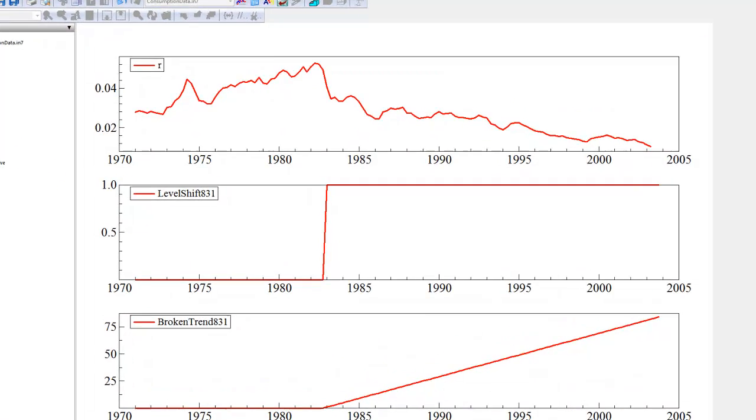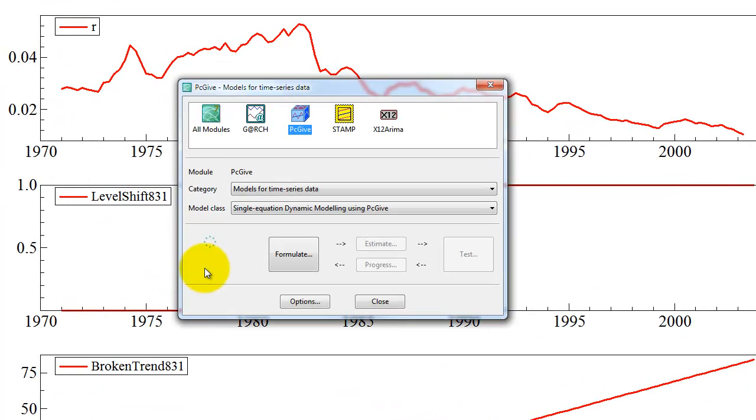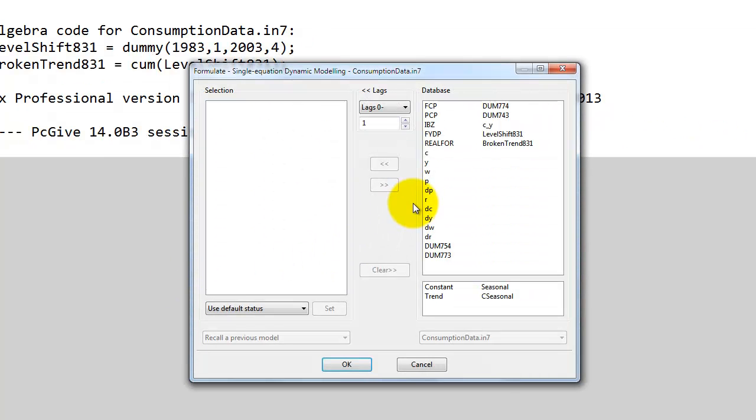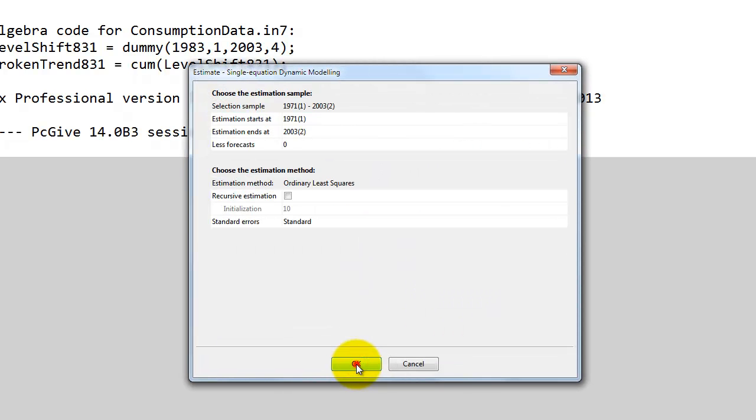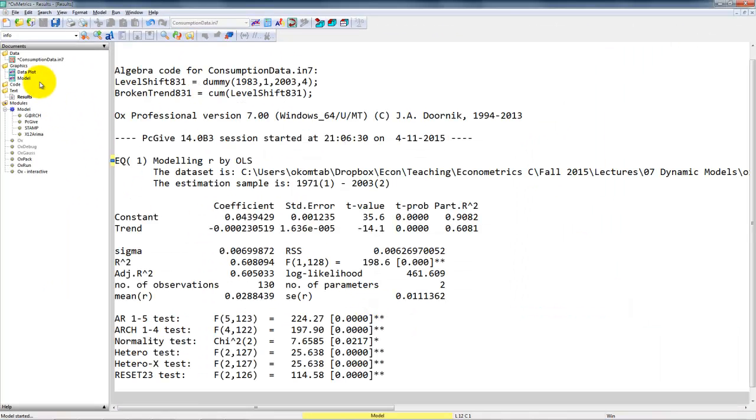So now, let's first specify a model in PCGive, Single Equation Dynamic Modeling, where we try to take out just a linear trend without any breaks. So we model R. We include a constant and we add a trend. And we just try to run this regression. Select the entire sample. Click OK. And this is what we get.